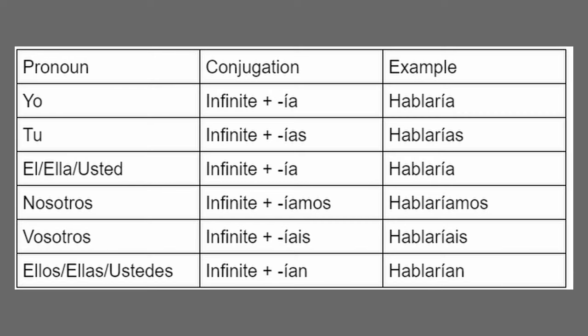Next up, we have the conditional tense. The same rules apply as the future tense. Using hablar: yo hablaría (I would speak), tú hablarías (you would speak), él/ella/usted hablaría (he/she/you formally would speak), nosotros hablaríamos (we would speak), vosotros hablaríais (you all would speak), ellos/ellas/ustedes hablarían (they/you all would speak).